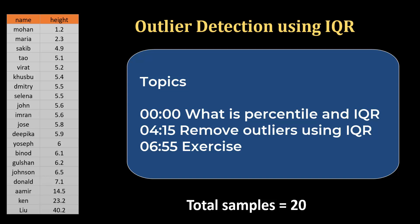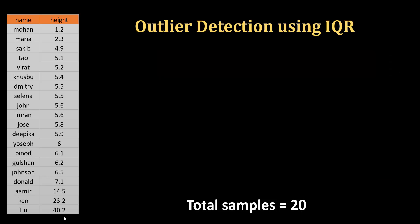Here I have a heights database. With visual examination you can easily tell that there are some outliers — these heights are in feet. Of course you cannot have a person with 40 feet height, hence all of these are outliers. Anything more than 7.1 is an outlier. Similarly, this is an adult dataset, so a 1.2 height is clearly an outlier as well.